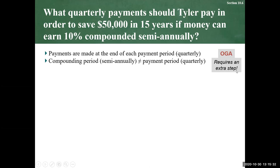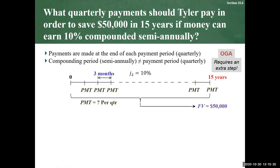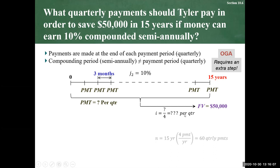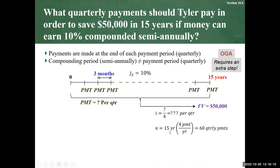Our timeline shows an ordinary annuity with payments at the end of the period. J2, our semi-annual nominal rate, is 10%, the future value is $50,000, and we have 15 years. Because it's a general case — quarterly payments don't match semi-annual compounding — we need a quarterly periodic rate. The number of quarterly payments is 15 years times 4, giving us 60 quarterly payments.